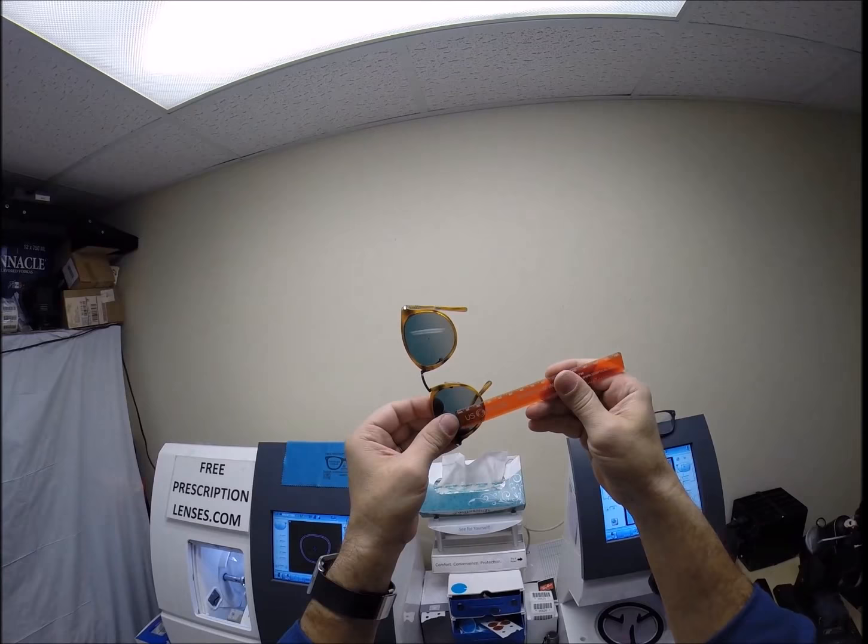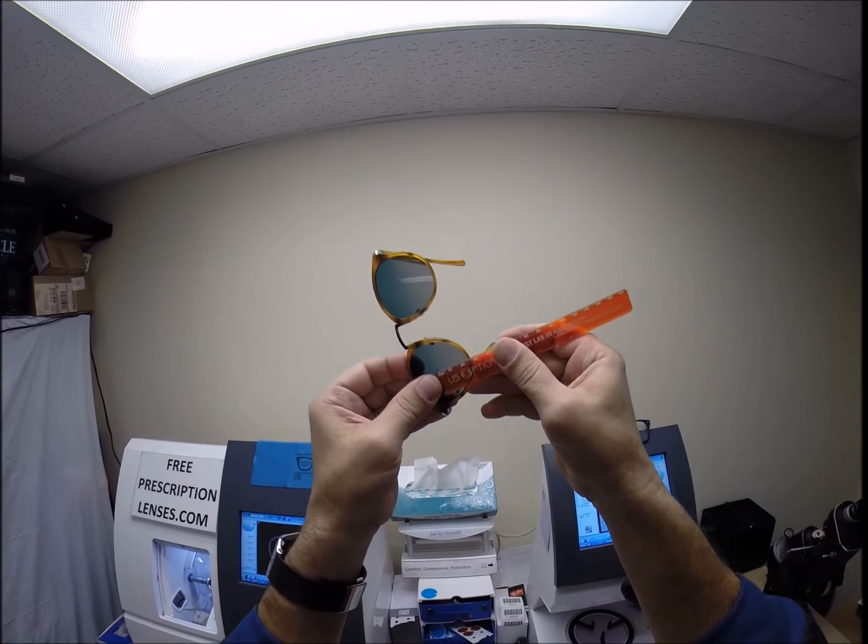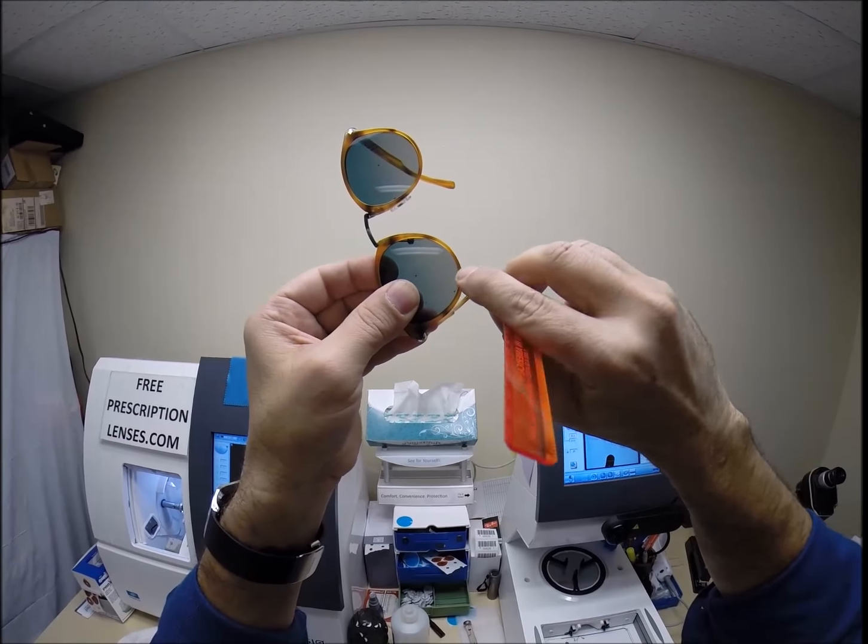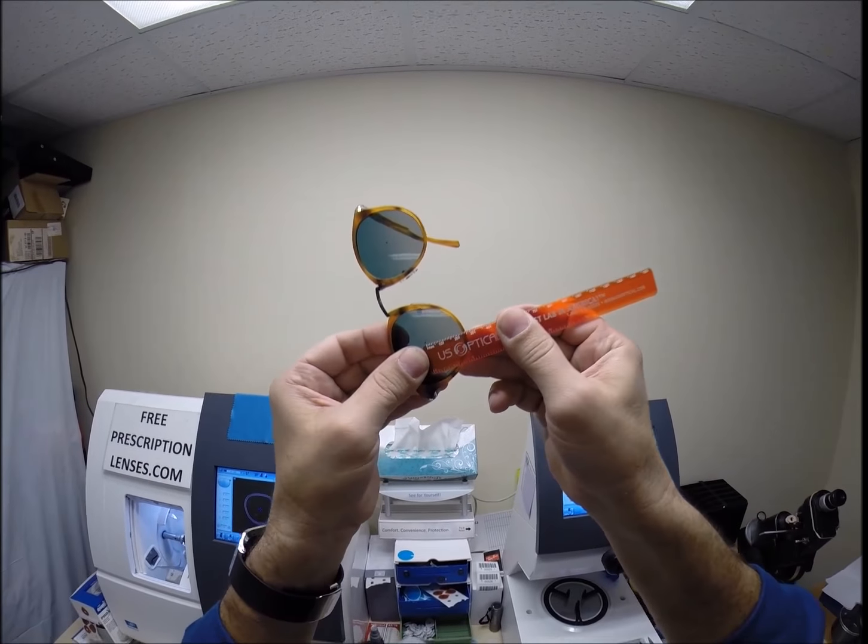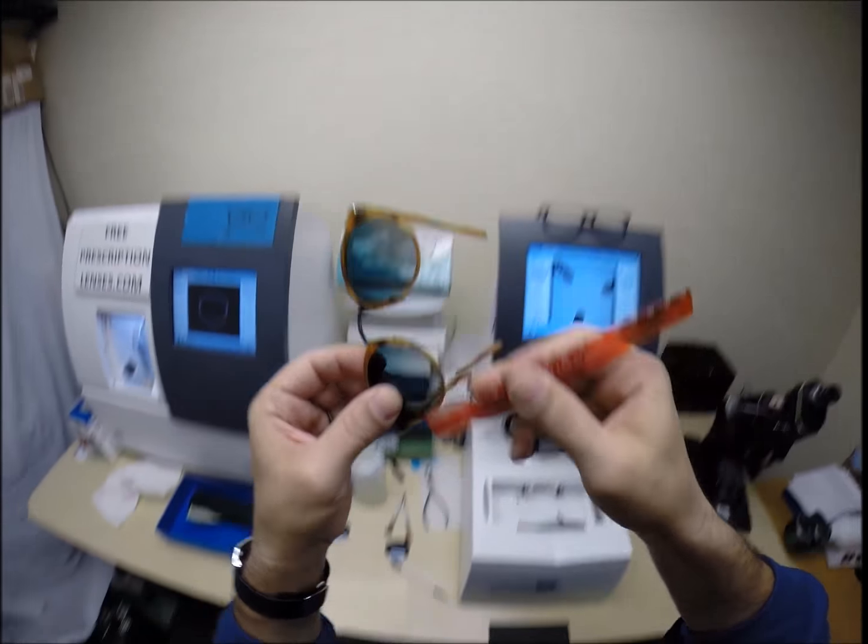I do want to check the optical center height of 24. We're going to the middle of the frame. Not the bottom of the lens, but the middle of the plastic. And we're getting 24. So, that is cut perfectly.